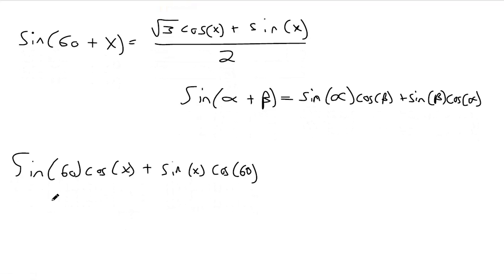We can evaluate sine of 60. That's the same as the square root of 3 over 2. And then we can evaluate cosine of 60. That's 1 half, so I'll bring that out front since that's just constant, no variables there.